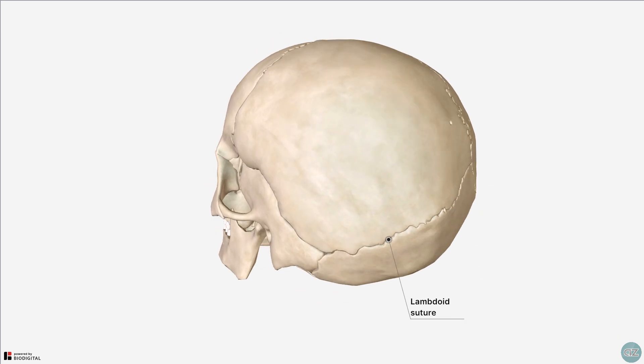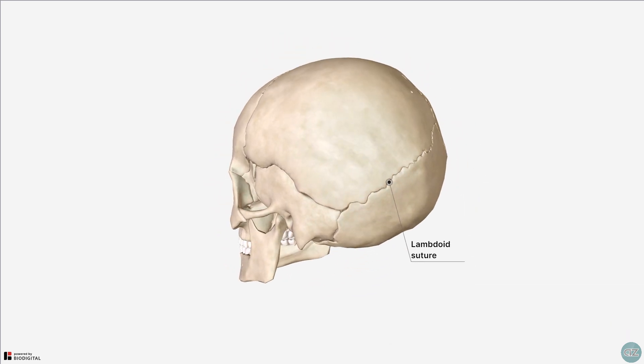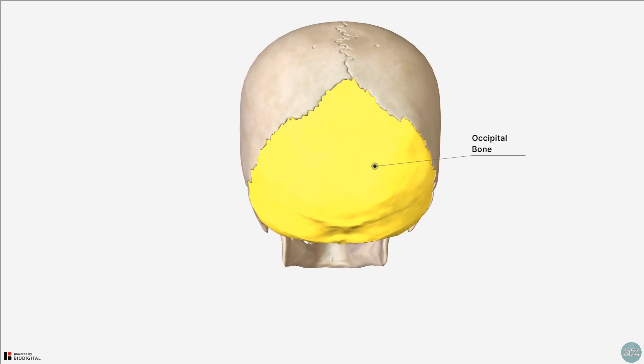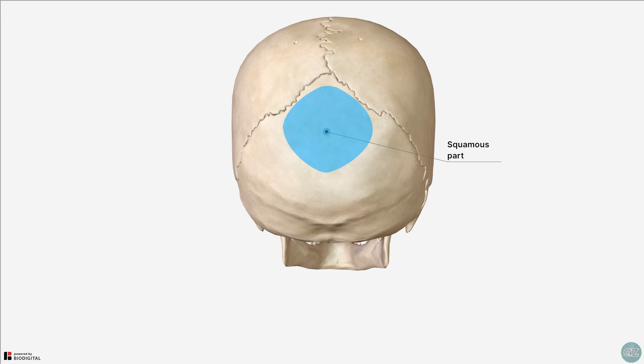Moving posteriorly, you can see how the parietal bones articulate with the occipital bone at the lambdoid suture. The last bone to talk about, which makes up the calvaria, is the occipital bone. Here we can see this flat part posteriorly, known as the squamous part.